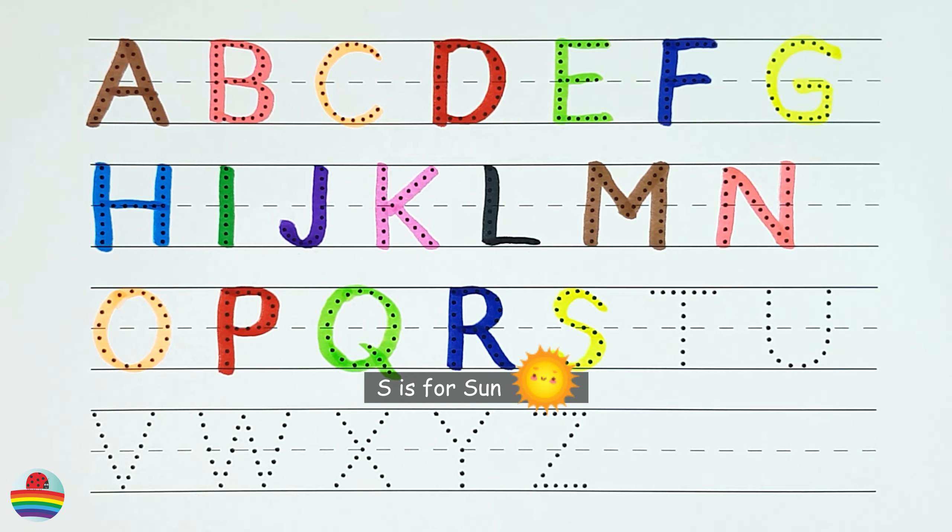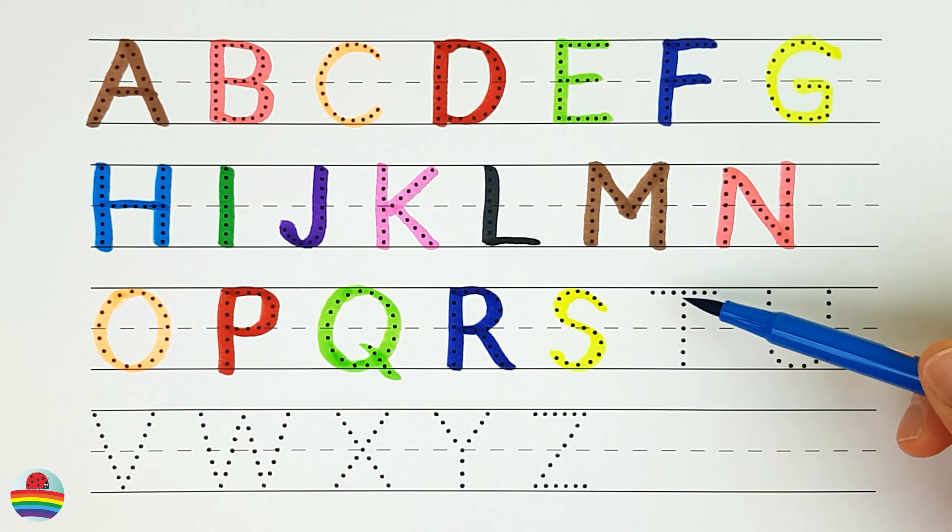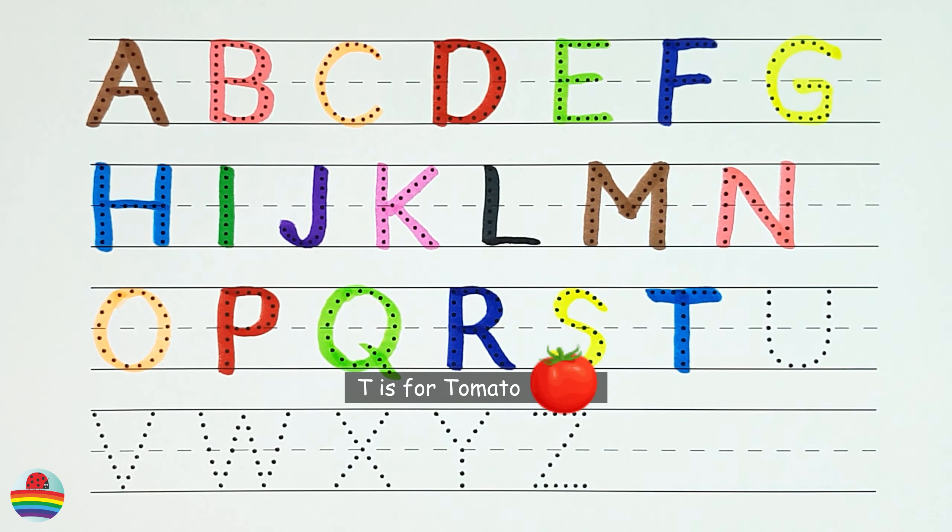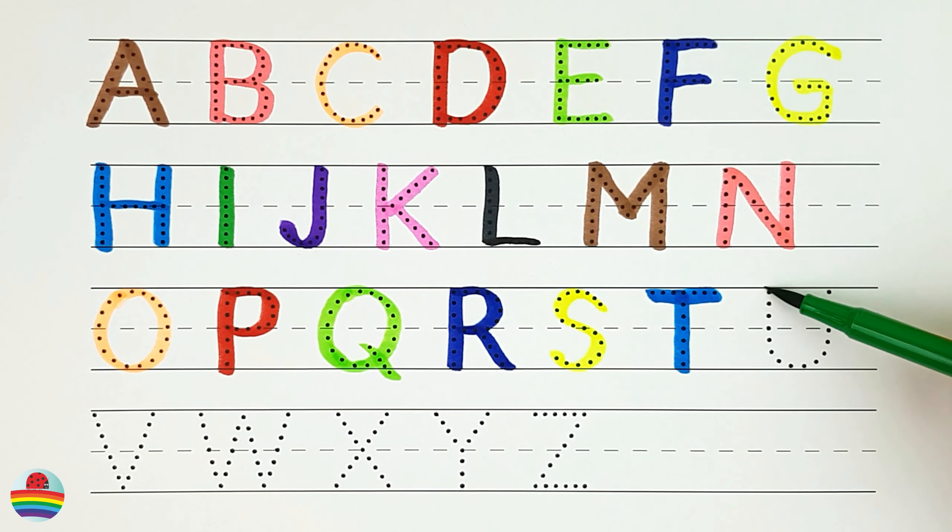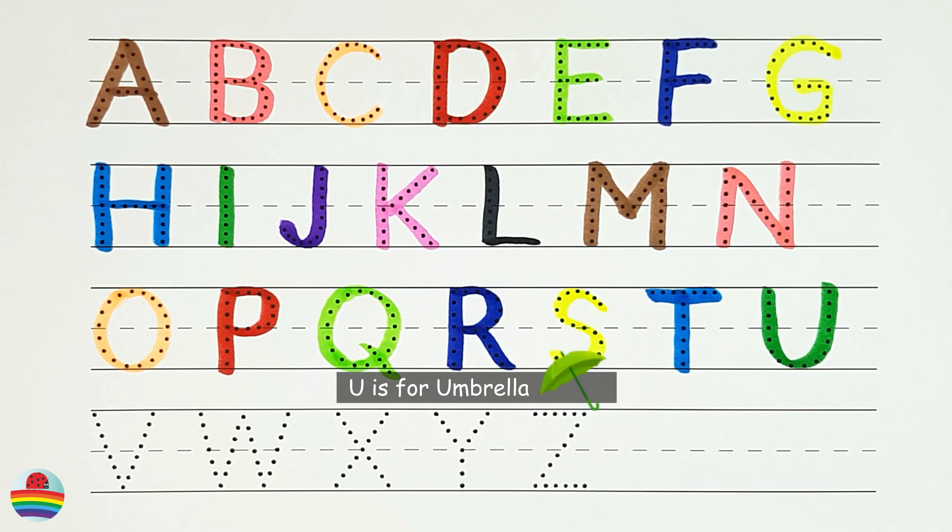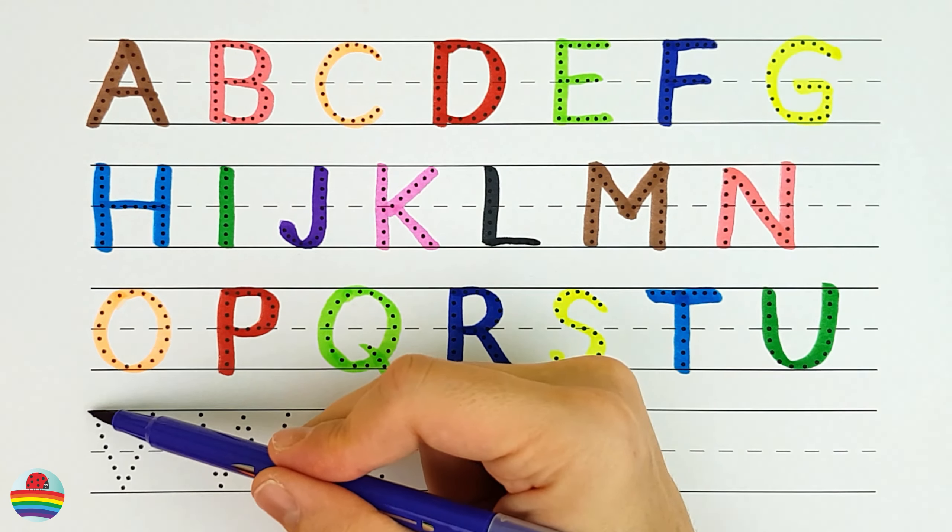S. S is for sun. T. T is for tomato. U. U is for umbrella.